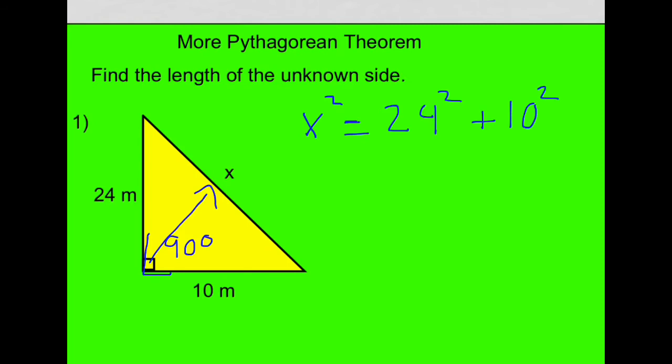And now you have a math equation that you solve. x squared equals, when I do 24 squared, 24 times 24 is 576, plus 10 squared is 100. And I keep working down the page, x squared equals 676.